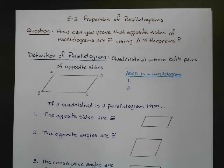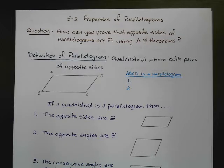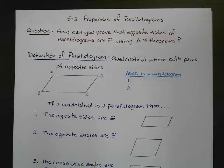Our question for today is: how can you prove that the opposite sides of parallelograms are congruent using triangle congruence theorems? So back from unit 3, where we did side-angle-side, side-side-side, angle-side-angle, all that other stuff — how can we use that to prove that the opposite sides of a parallelogram are going to be congruent to each other?